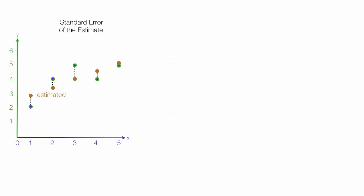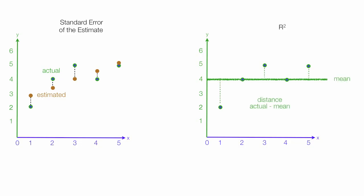Remember the standard error of the estimate compares the estimator to the actual values. And r squared is comparing the distance between the actual values to the mean with the estimated values to the mean or the distance of the estimated values to the mean. Very similar but different.